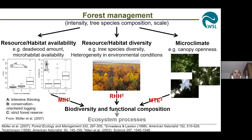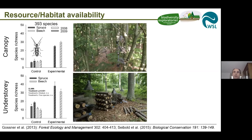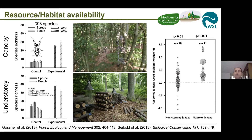Here is an example of resource habitat availability. In this study in the Biodiversity Exploratories, we enriched deadwood on the ground level and also in the canopy in spruce and beech stands. What we found is that independent of the stratum and independent of the forest type, the experimental enrichment led to an increase in biodiversity. This is also confirmed by a meta-analysis. We found that species are promoted by deadwood enrichment — on average, also non-saproxylic taxa. So habitat resource availability is a main driver of biodiversity in forests.